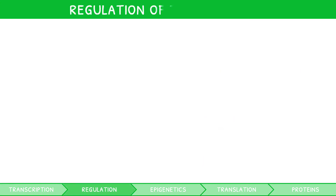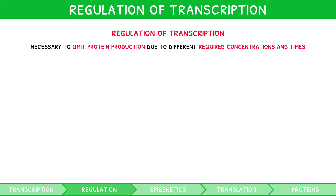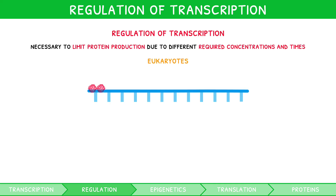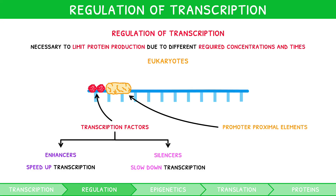But how do we regulate how much transcription occurs? The regulation of transcription is necessary to limit protein production via translation, since all proteins are required at different concentrations and at different times, so it would be wasteful to constantly generate them. In eukaryotes, proteins bind to DNA during transcription before RNA polymerase. These proteins are known as transcription factors, and they can be enhancers, which speed up transcription, or silencers, which slow down transcription. There is also a small subset of transcription factors known as promoter proximal elements, which are located close to the promoter region and are required to initiate transcription.